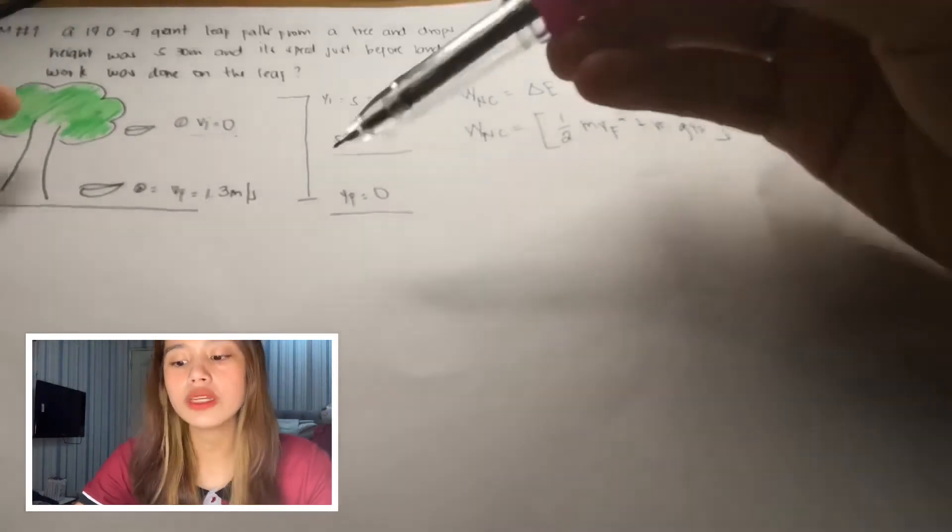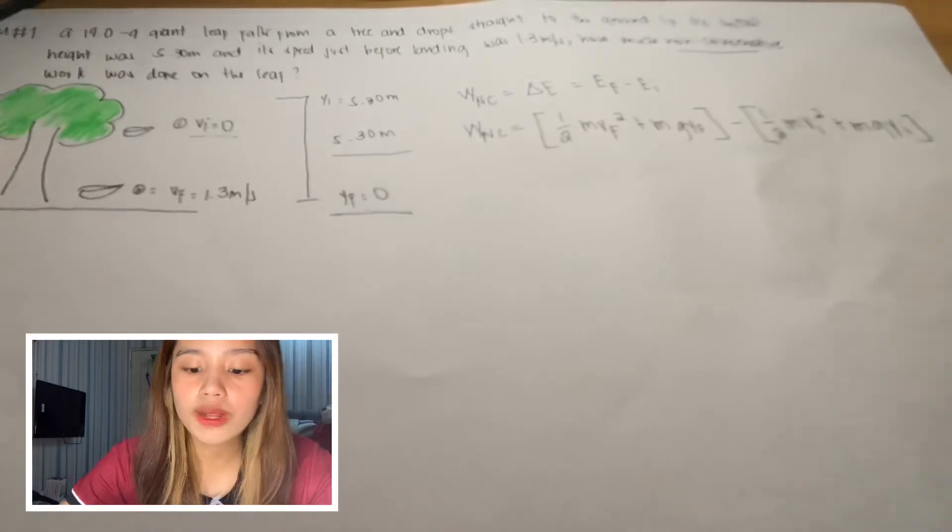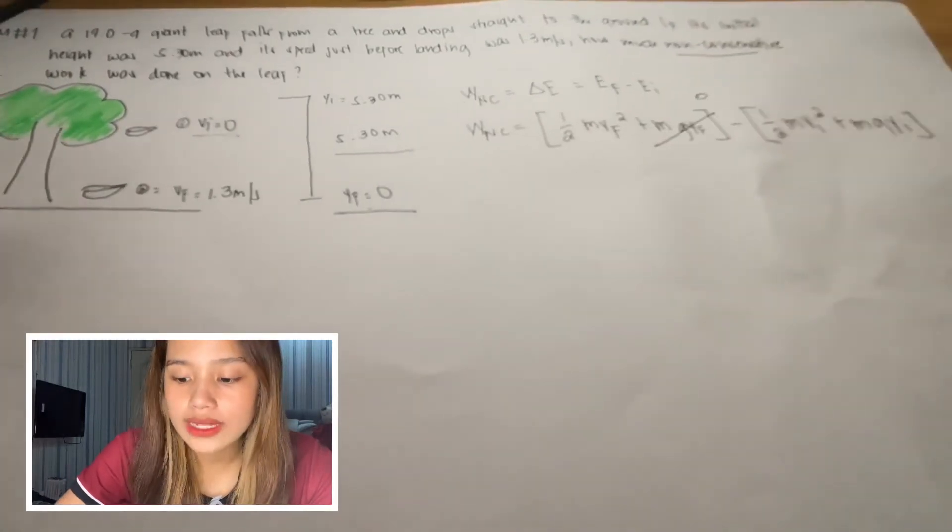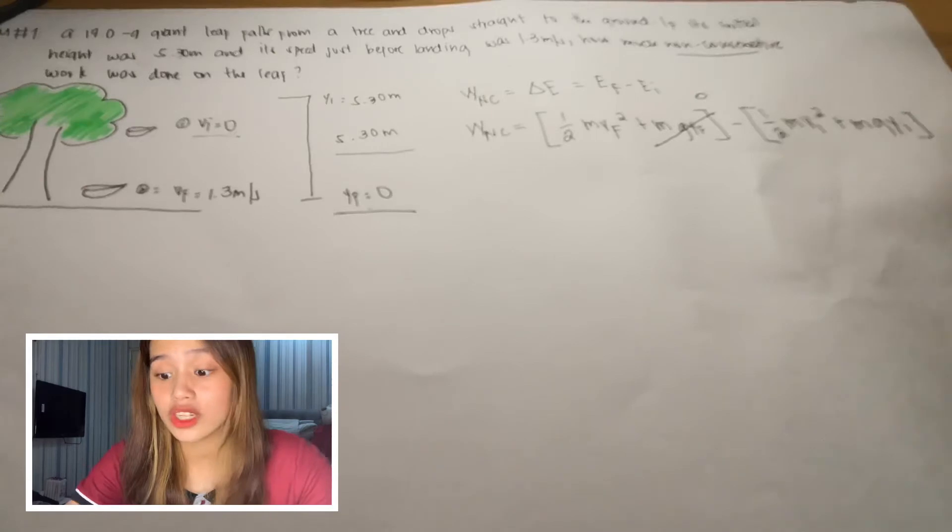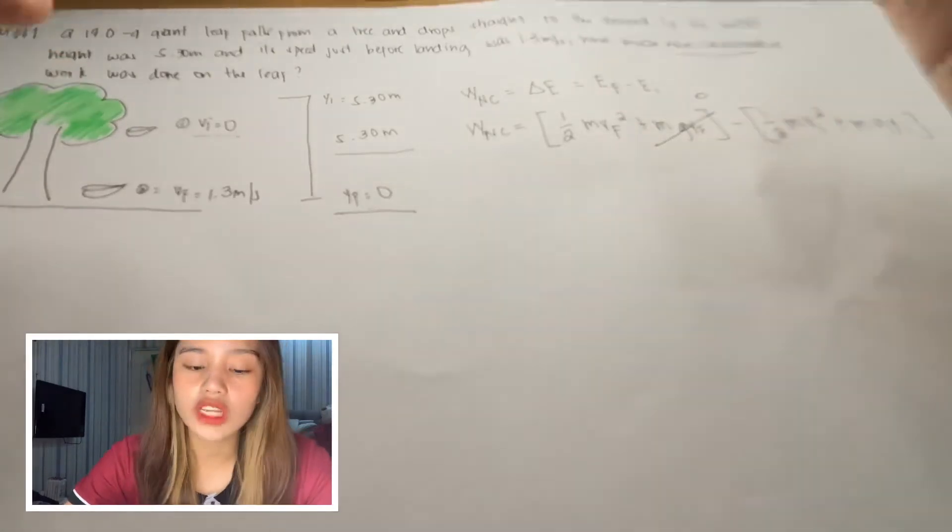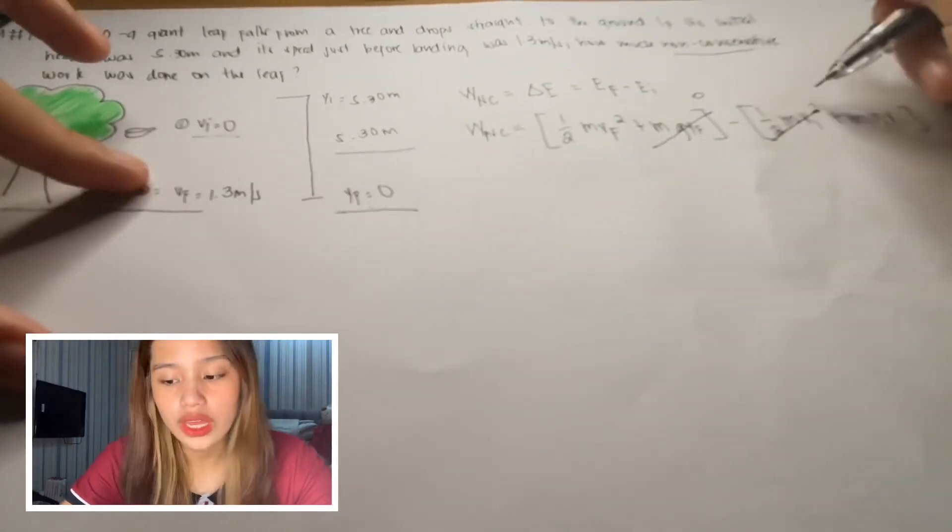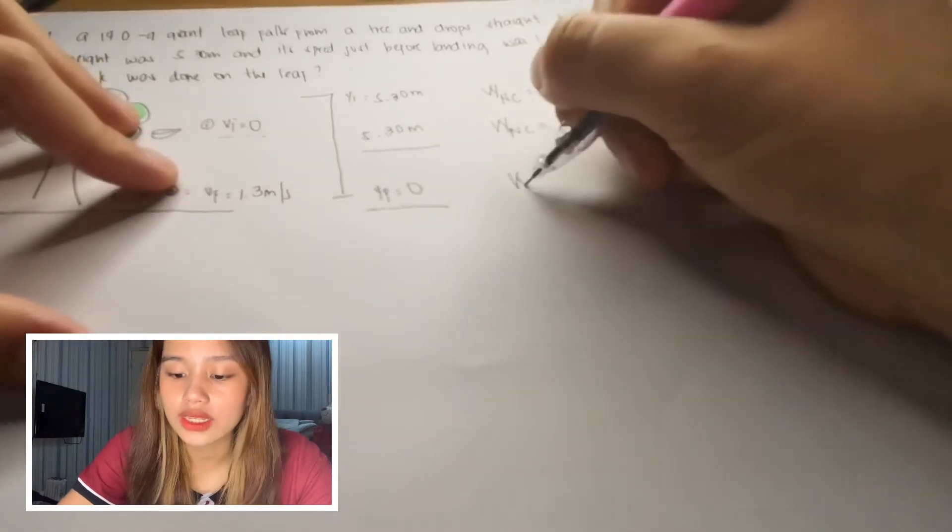So we can see here that our final position is 0. So we can cancel that since it's just 0. And our initial velocity here is also 0. So we can just cancel that as well.